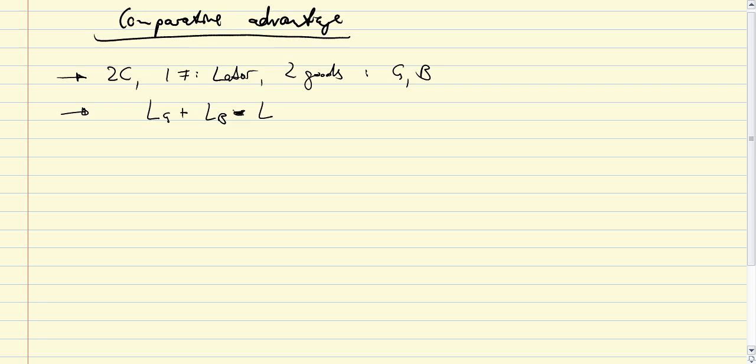So the labor constraint together with linear technology, namely A equal to L over Q or L equal to AQ, gives us AGQG plus ABQB equal to L as the production possibility frontier for the home country.